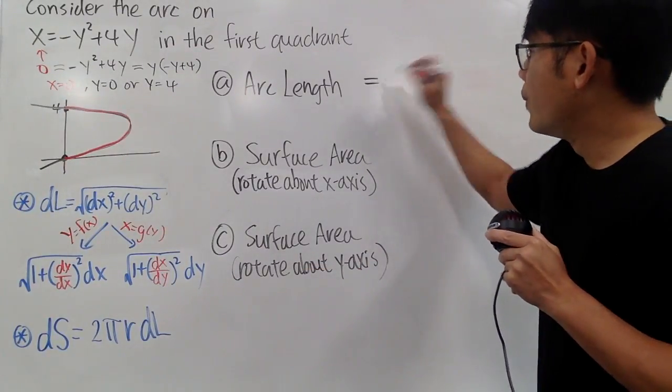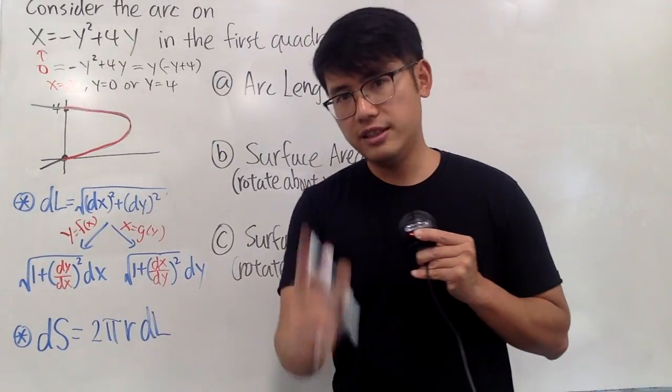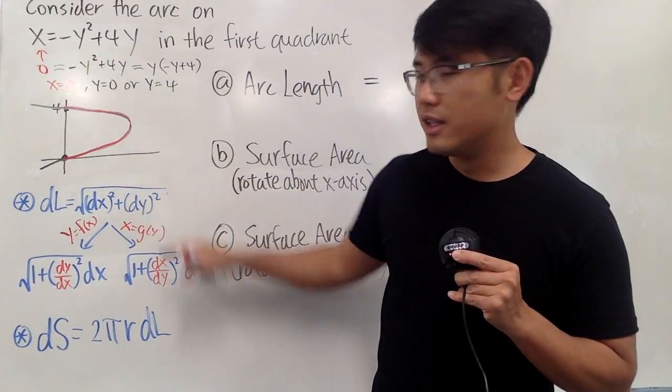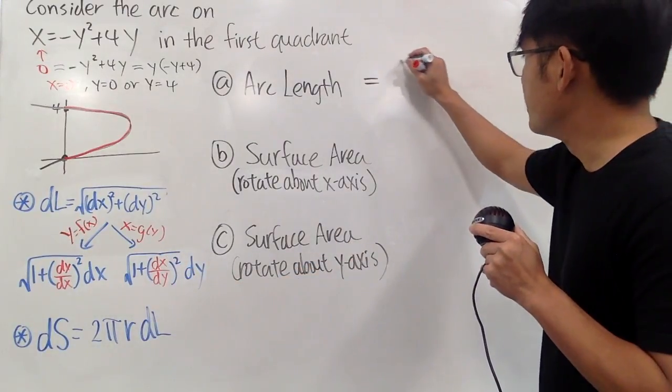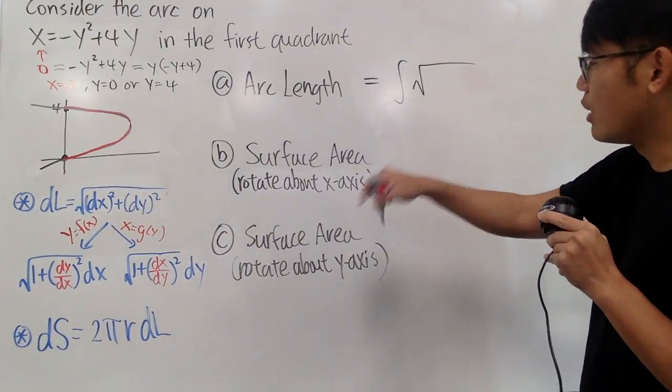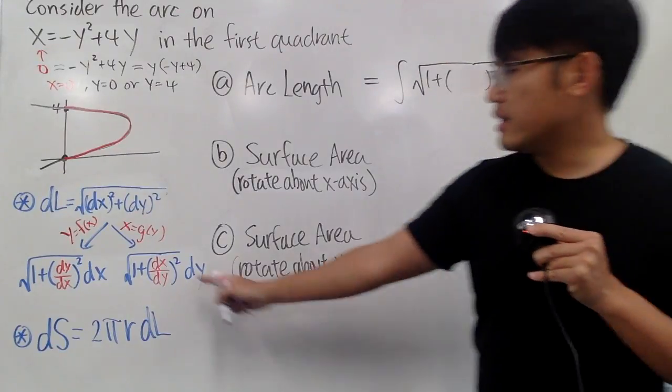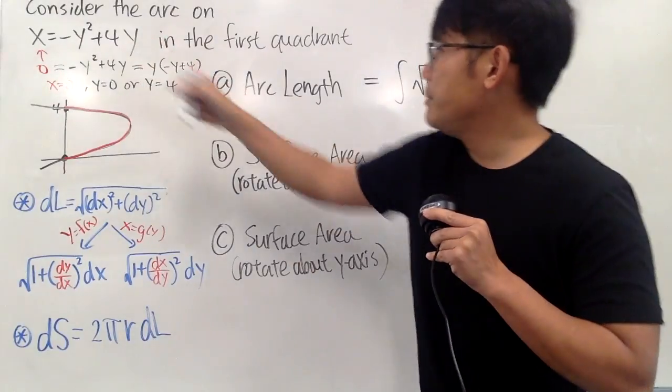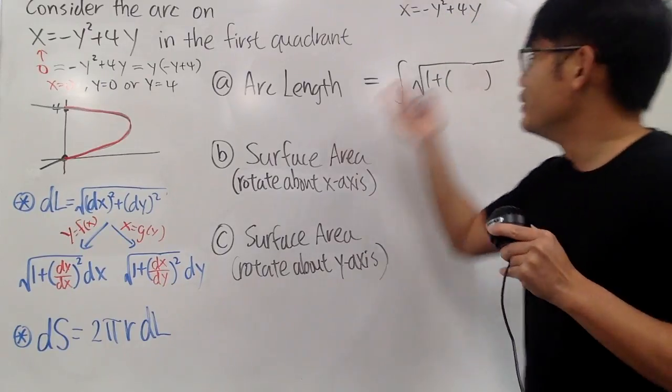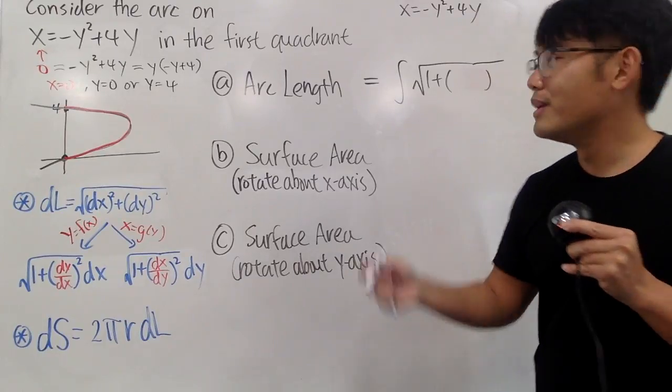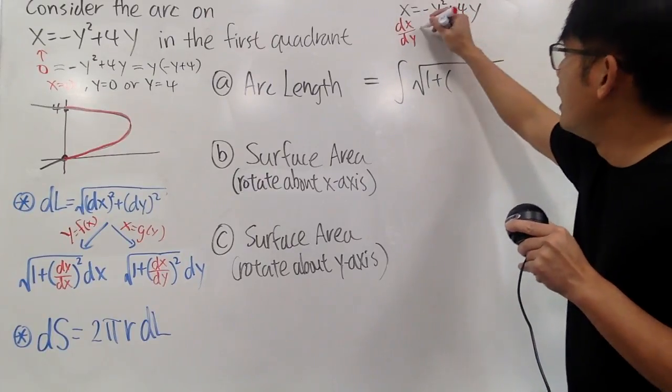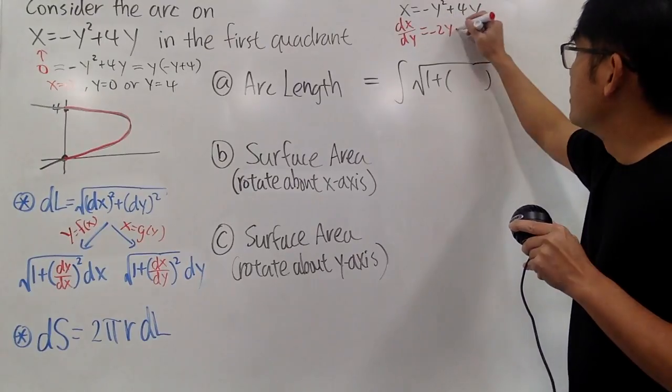Let's find the arc length first. Well, again, there are two versions. This time, we will have to use this version, because we have given x as a function of y. So, use this version for it. So, let's go ahead and put down the integral sign, add up all the little dl's, right? And we have the integral of the square root of 1 plus parentheses. Okay, I need a dx/dy now. Well, let me write it down right here for you guys. We know x is equal to negative y squared plus 4y. Okay, dx/dy is just look at this equation and do your usual derivative, but you treat this as your dependent variable now, and y as your independent variable, and just go ahead and do it the usual way. You get negative 2y plus 4. Okay?